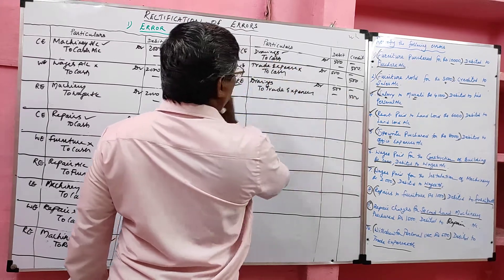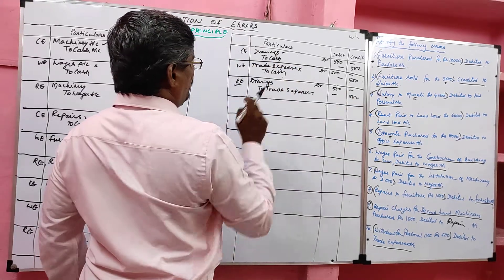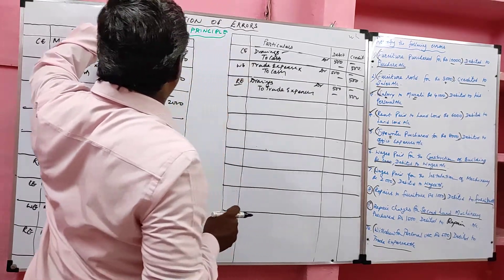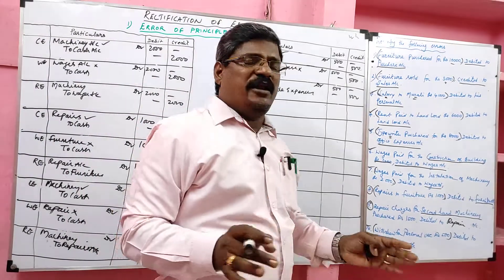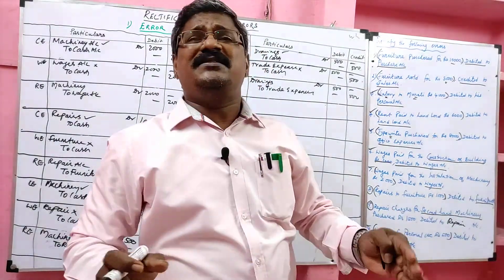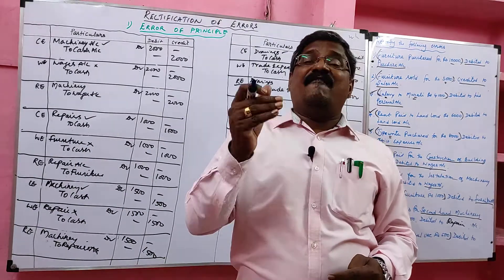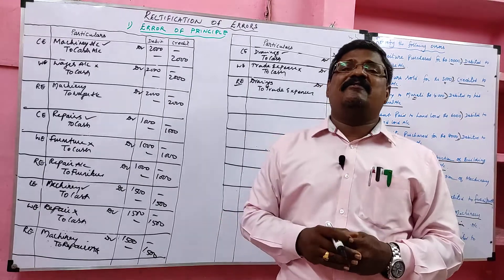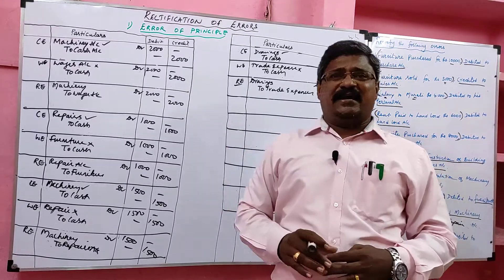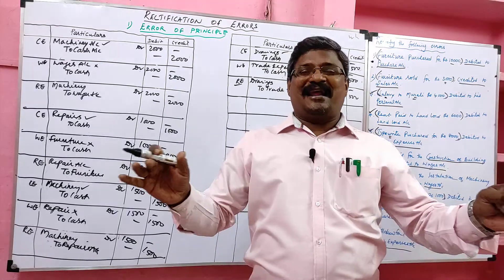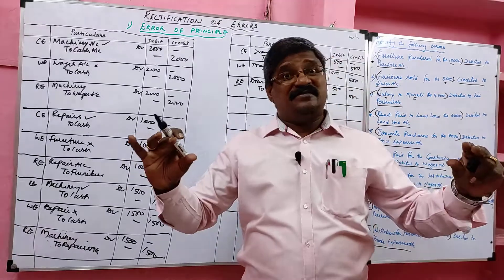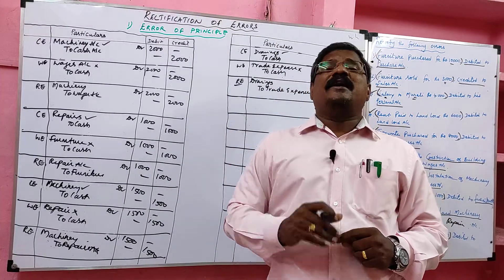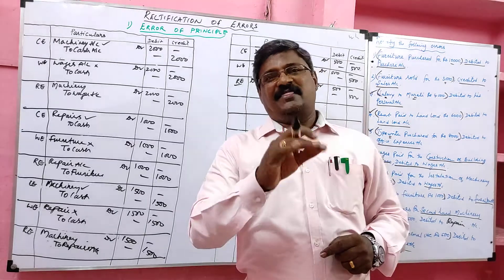This is error of principle because drawings is a personal account and trade expense is a nominal account — instead of recording personal account, they recorded nominal account. Students, error of principle is an error in fundamental accounting when applying golden rules. This error is not disclosed by the trial balance — the trial balance will agree, but the entry is still wrong. We have completed error of principle; in the next class we will solve different problems.